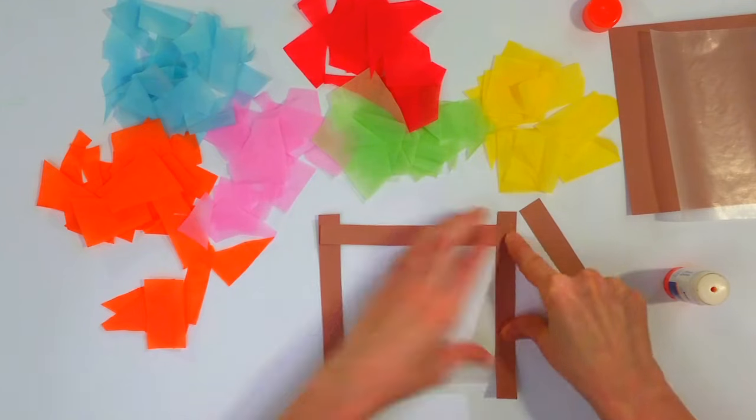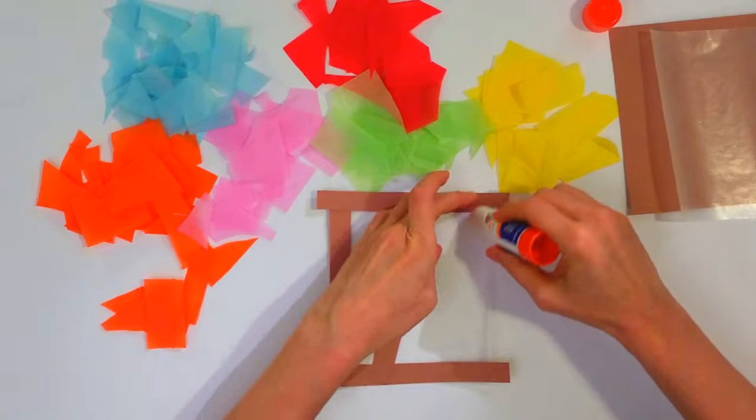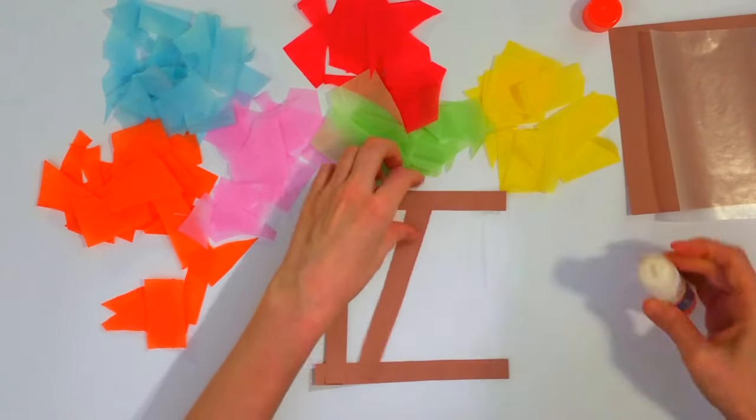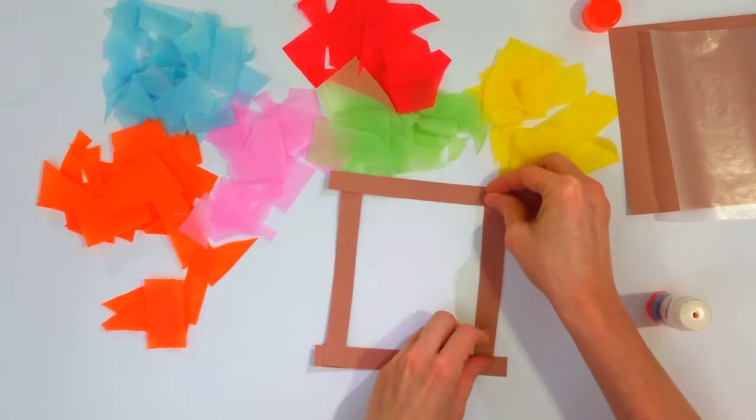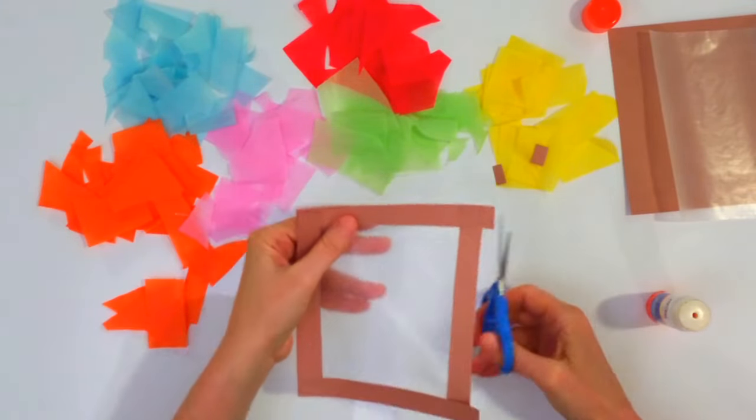And then you're going to trim up the edges, so it's okay if it overlaps a little bit. So once you have the frame assembled, just trim off the edges.